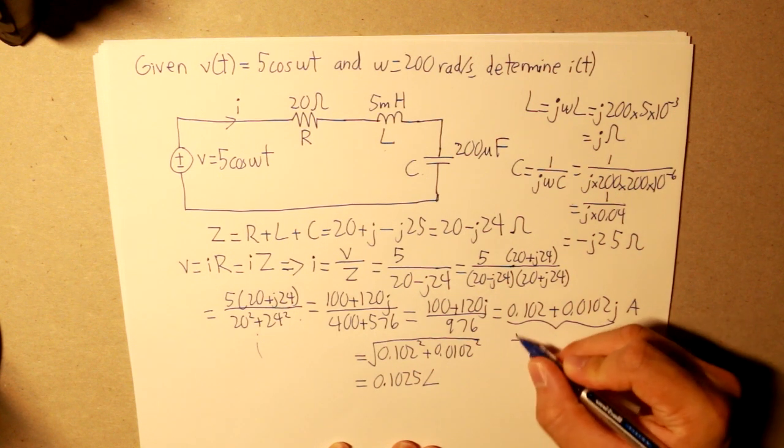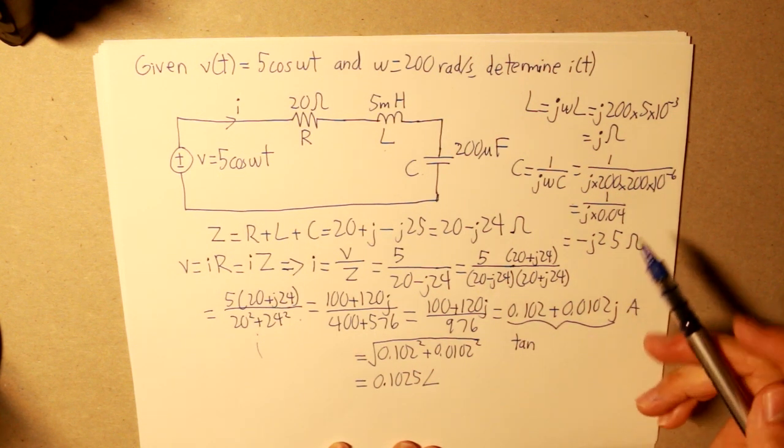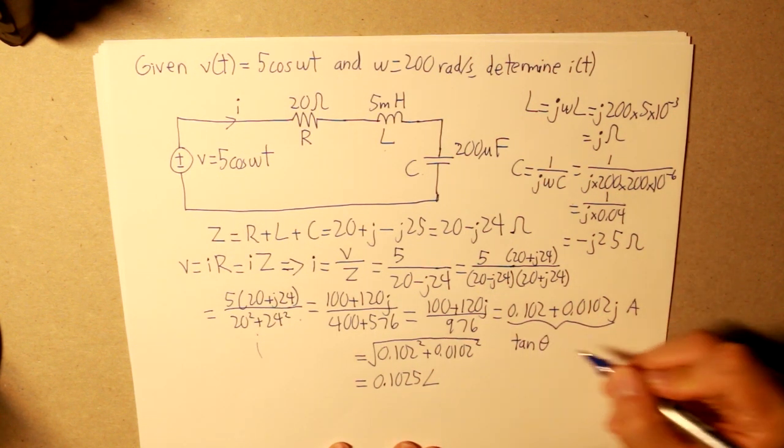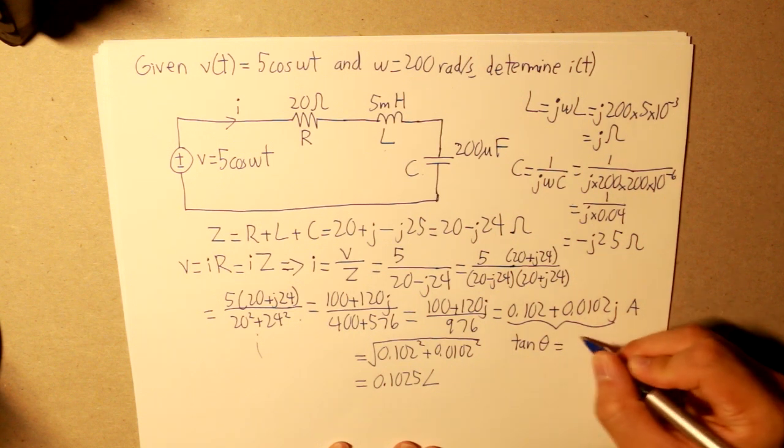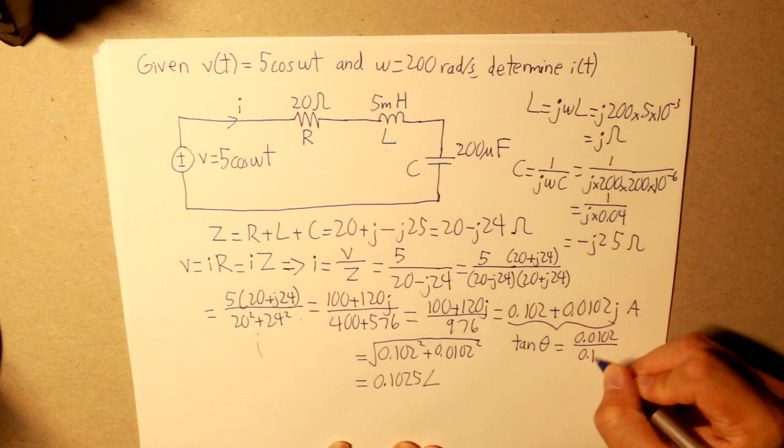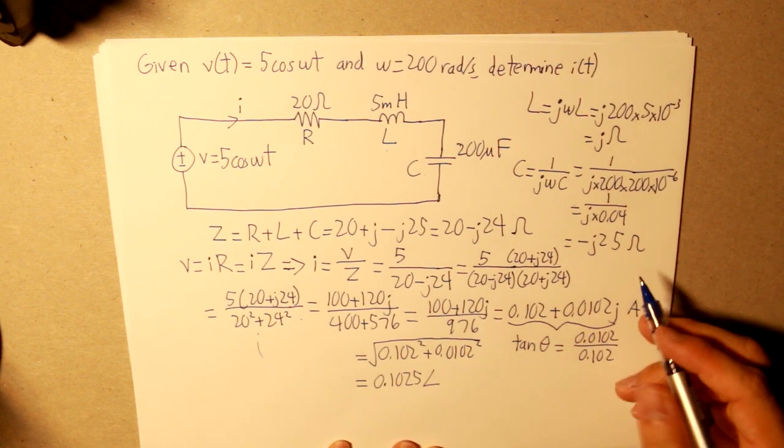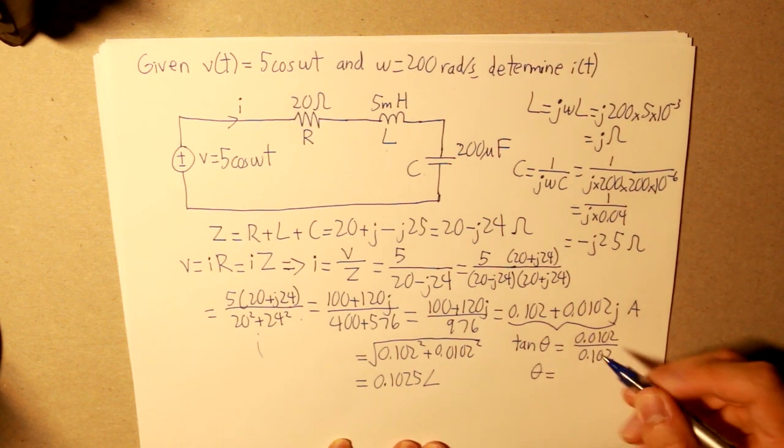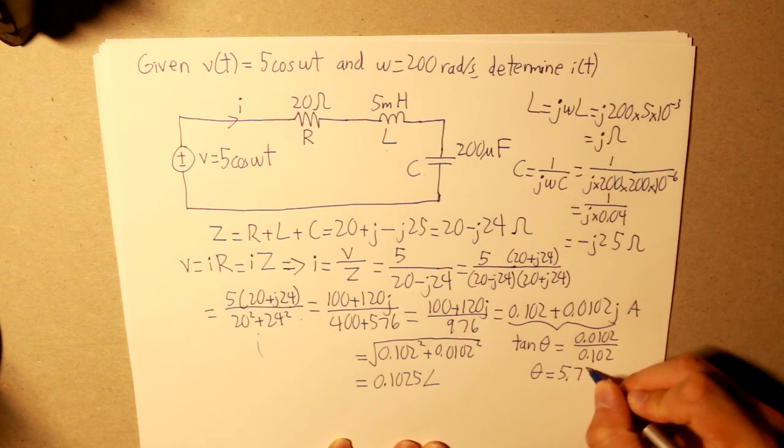Now we have to determine our angle. So our angle, that is simple. Using trigonometric identity, what we get is tan inverse of the opposite divided by the adjacent. And in the end, our angle will be 5.71 degrees.